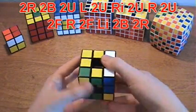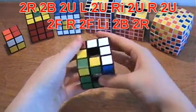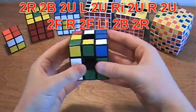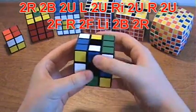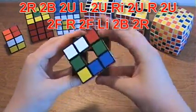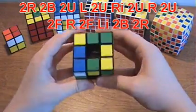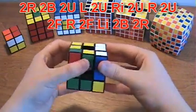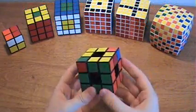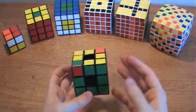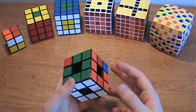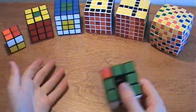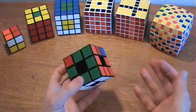So, it's 2R, 2B, 2U, L, 2U, Ri, 2U, R, 2U, 2F, R, 2F, Li, 2B, 2R. Now, I know that is a long algorithm to memorize, but if you're into cubing you'll probably eventually get a 4x4 and then you'll have to apply it there too. So, it's not just for the void cube.